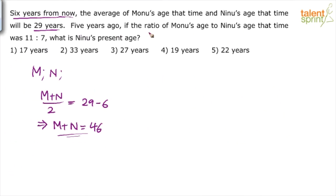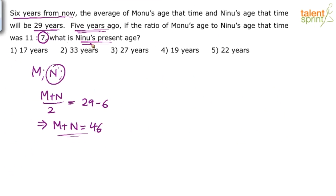Now the second part: five years ago, if the ratio of Monu's age to Ninu's age was 11:7, what is Ninu's present age? From the second statement, you can directly eliminate some options. Five years ago, Ninu's age was a multiple of 7. Let us go by options. If Ninu's present age is 17 years, five years ago it was 17 − 5 = 12.